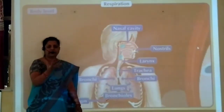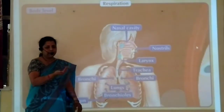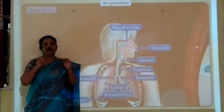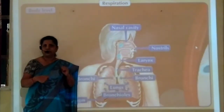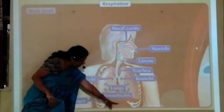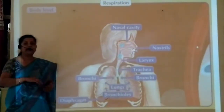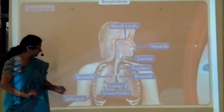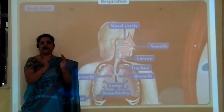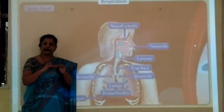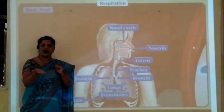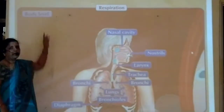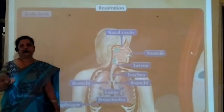When the diaphragm relaxes, the volume of the thoracic cavity decreases, the air pressure inside the lungs increases, and air is expelled out. Through this expelled air, we release carbon dioxide. In this way, exchange of gases takes place at the body level — inhalation and exhalation.